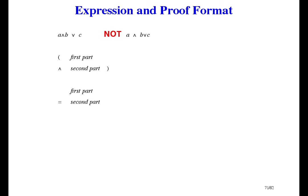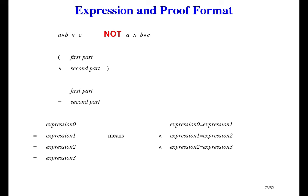Here's a continuing equation, nicely formatted. It really means that expression 0 equals expression 1, and expression 1 equals expression 2, and expression 2 equals expression 3. A continuing equation is very useful as a proof that the first expression equals the last one. To help the reader understand the proof, we put hints over on the right side of the page. Hint 0 says why expression 0 equals expression 1 — usually it's just the name of some law. And hint 1 says why expression 1 equals expression 2, and so on. The hints go between the two expressions that we're trying to bridge.